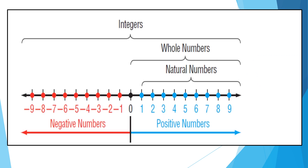Natural numbers or counting numbers are the numbers we use for counting. These are examples of counting numbers — the set of natural numbers. When you add zero to the set of natural numbers, that becomes the set of whole numbers. Then when you add negative numbers to the set of whole numbers, that becomes integers. So integers include positive, zero, and negative numbers.